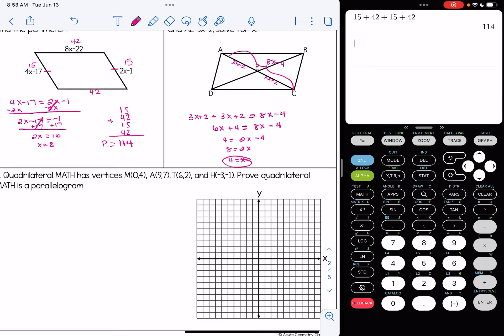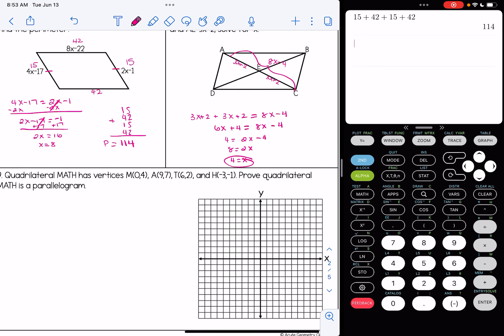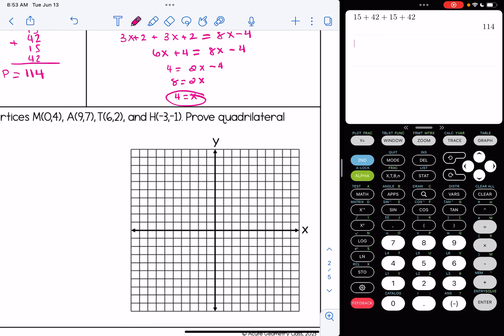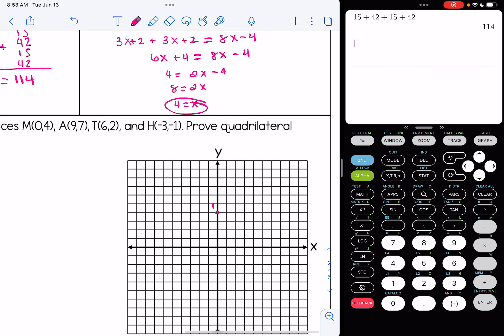For our last question, we are given a coordinate proof. So we're given the four vertices of quadrilateral MATH, and we have to prove that this is a parallelogram. So I'm going to start by plotting this. Even if the question says that it's optional to plot, I always find it helpful to plot the picture. So that is a recommendation. And I'll talk about why I find that helpful in just a second.